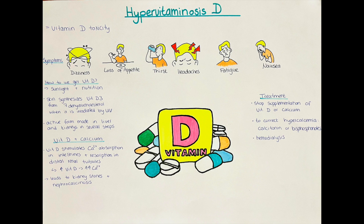Vitamin D is a fat-soluble vitamin and the way we get vitamin D is from either the sun or from our nutrition. If it's from the sun, our skin synthesizes vitamin D3 from a compound already present in the skin called 7-dehydrocholesterol, which when irradiated with UV rays forms vitamin D3. When we get sun rays, it causes cholesterol to produce vitamin D. Another option is to get vitamin D from food sources such as fish, grains, several vegetables, and also supplements.